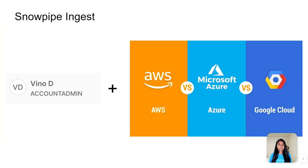You will need a Snowflake account with the user role that has the required permissions to run the DDL commands. You also need an account with one of the supported cloud service providers to use Snowpipe ingest.